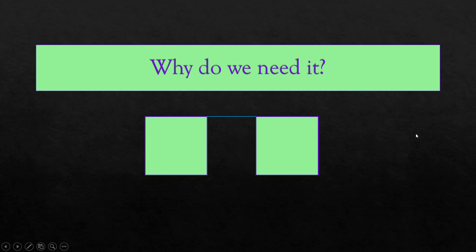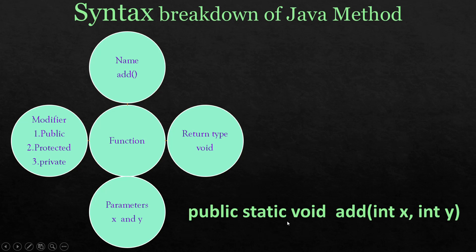If we have to do something 10 or 20 times in the program, we will not keep creating the function again and again. Instead, we create it once and call it again and again. Let's first understand the syntax breakdown of a Java method. The main is itself a function.